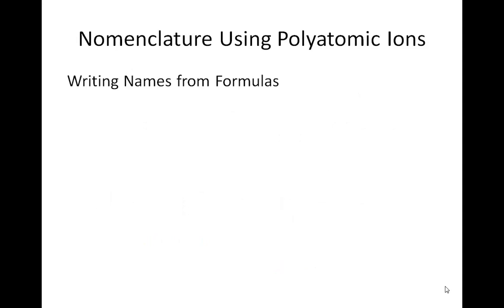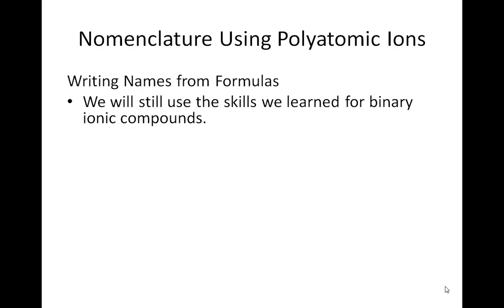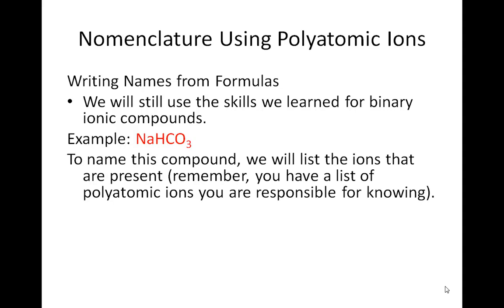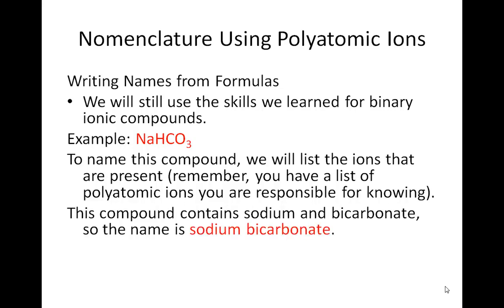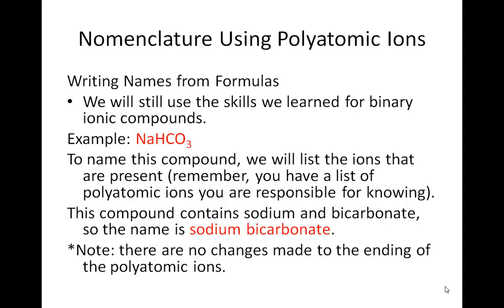Now looking at polyatomic ions — again, you have a list of these to memorize. We're going to be writing names from formulas, still using the skills we learned for binary ionic compounds. For example, NaHCO3: you should be able to recognize that HCO3, all together, is a polyatomic ion. To name this compound, list the ions present — sodium and bicarbonate, or hydrogen carbonate. So the name is sodium bicarbonate. Remember, there are no changes made to the ending of polyatomic ions; you just list what they're called.